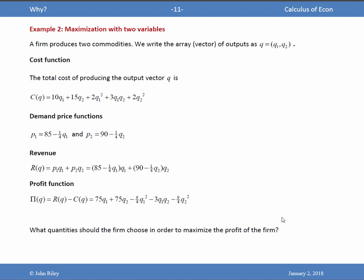Example two. Not quite so obvious. A firm produces two commodities. So we'll write this as an array, a vector of outputs Q1 and Q2. And we'll often use this notation. So if you just see a Q without a subscript, you don't really know whether it's a single output or an array of outputs. The context should make that clear. The cost function. The cost depends upon Q, the array or vector. And it has linear terms and quadratic terms.